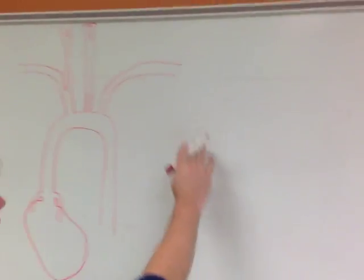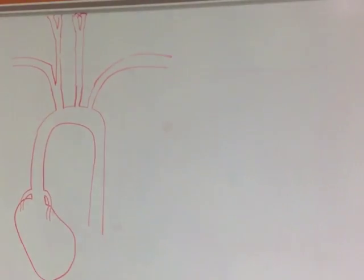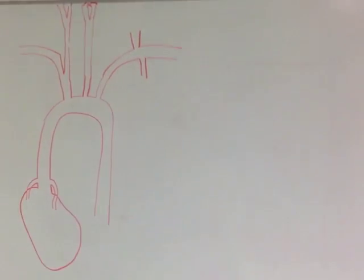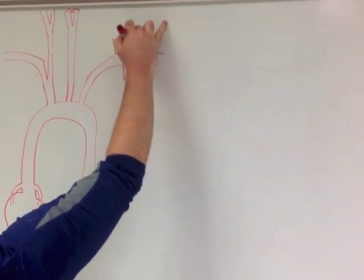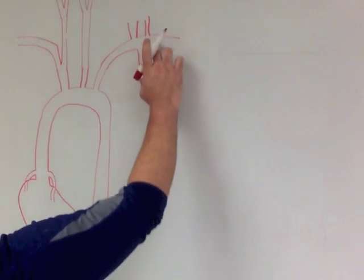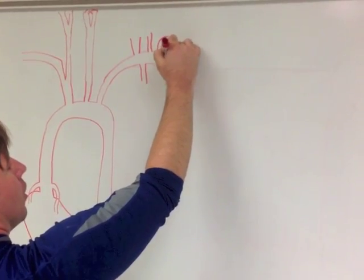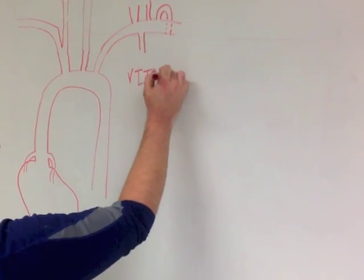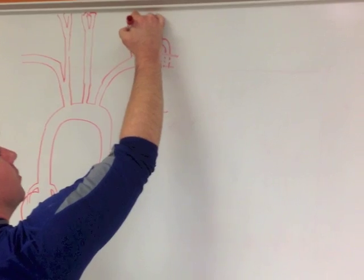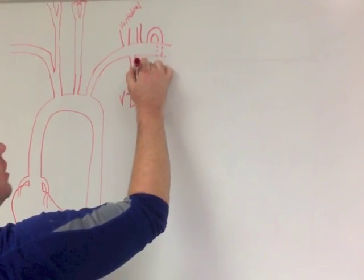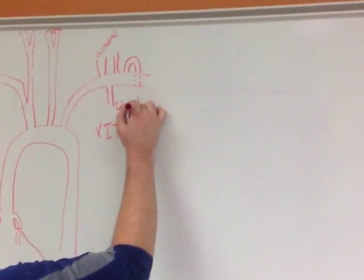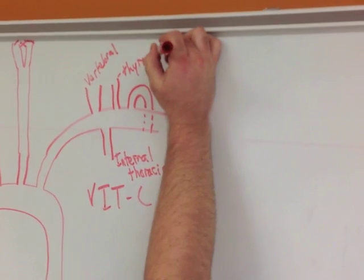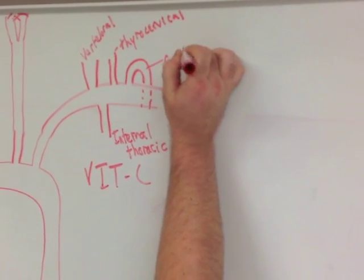Coming off of our subclavian arteries, so this happens on both sides, the first major branch that we get is vertebral, followed by internal thoracic artery, followed by thyrocervical artery, and then finally costocervical artery. So the acronym to help us remember this is VITC for vitamin C. That's vertebral, internal thoracic, thyrocervical, and costocervical.